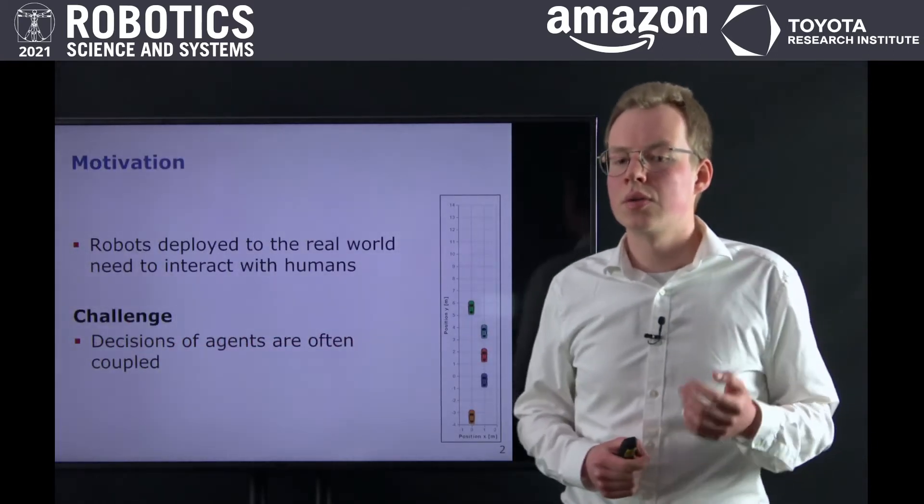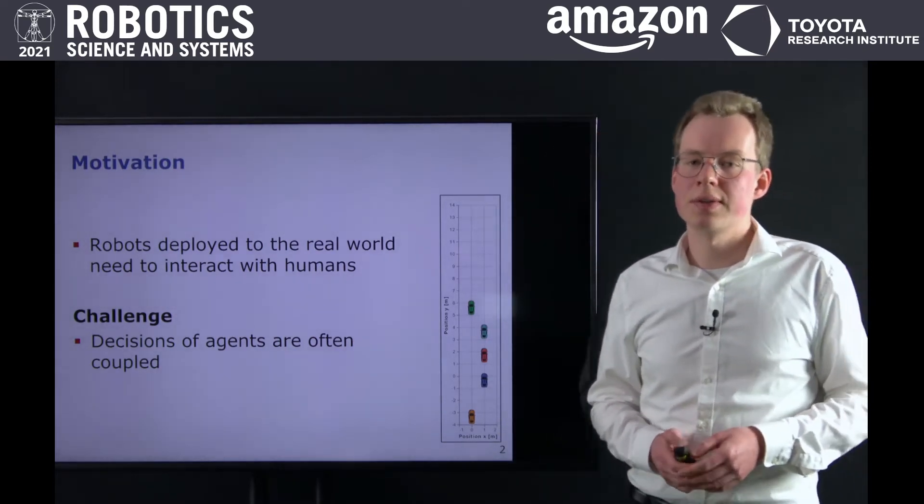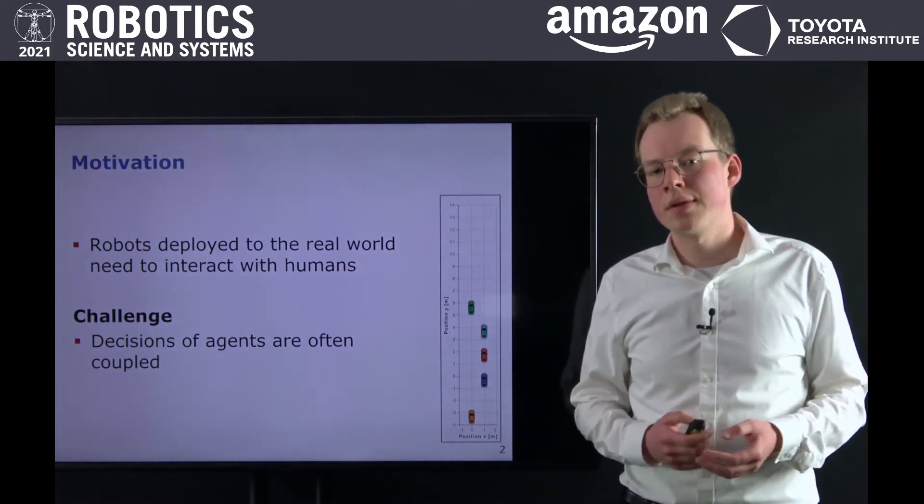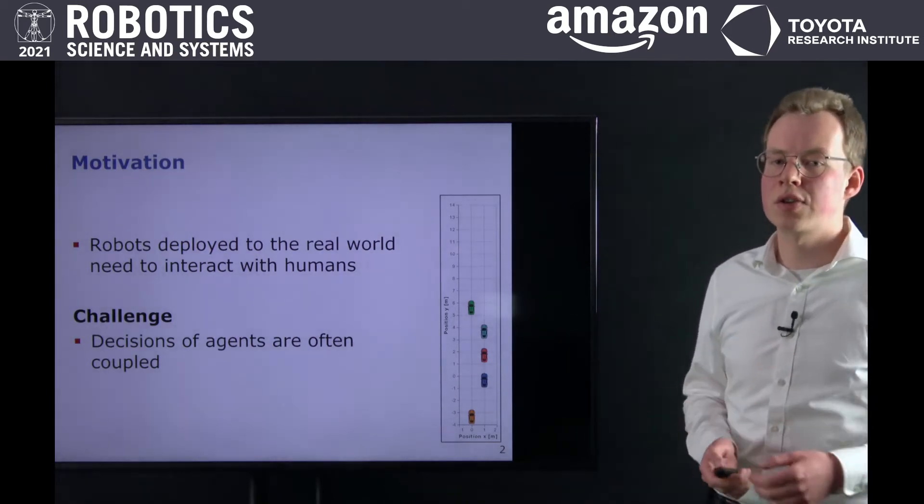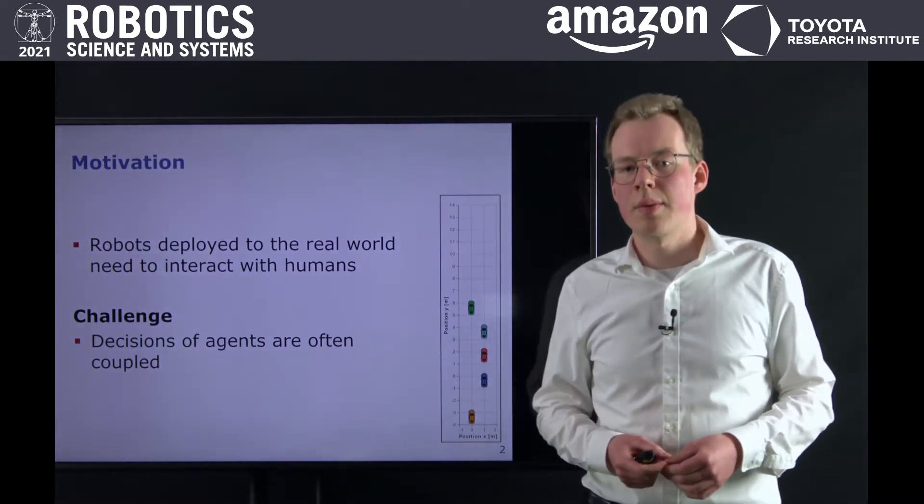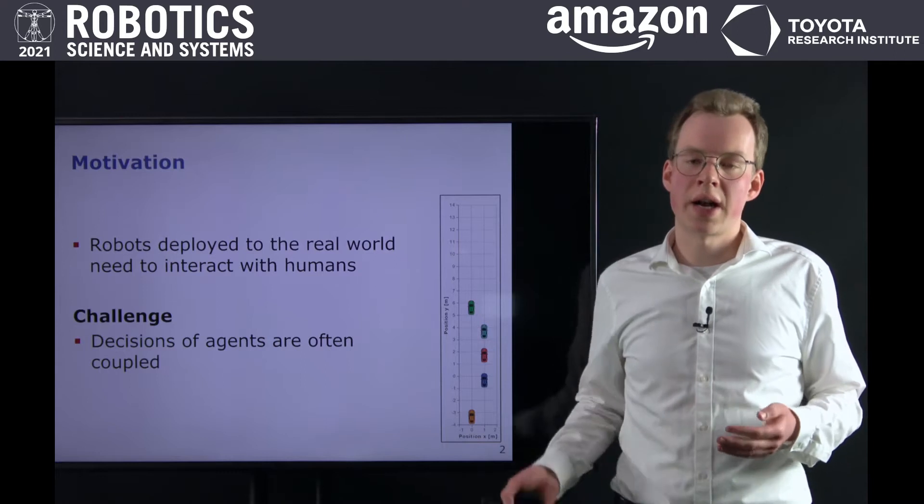Robots deployed to the real world do not operate in isolation, but they must interact with other agents such as humans. In these shared environments, the decisions of multiple players are often closely coupled. For example, in the highway driving scenario shown here, the driver of a fast car approaching from behind may abort their overtaking maneuver if one of the slower cars pulls in front of them.